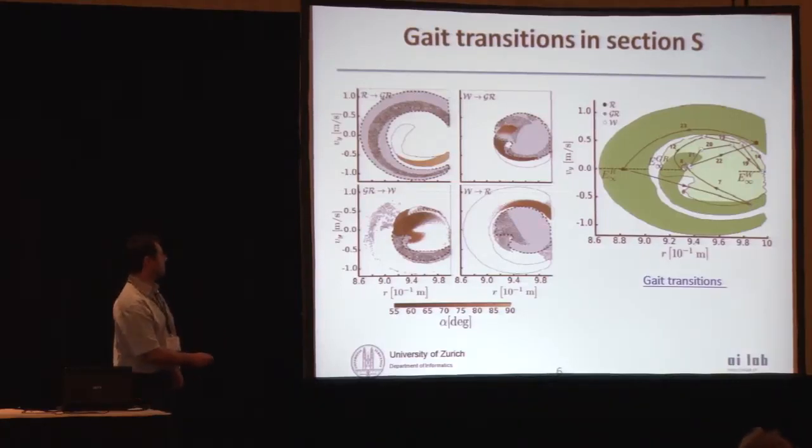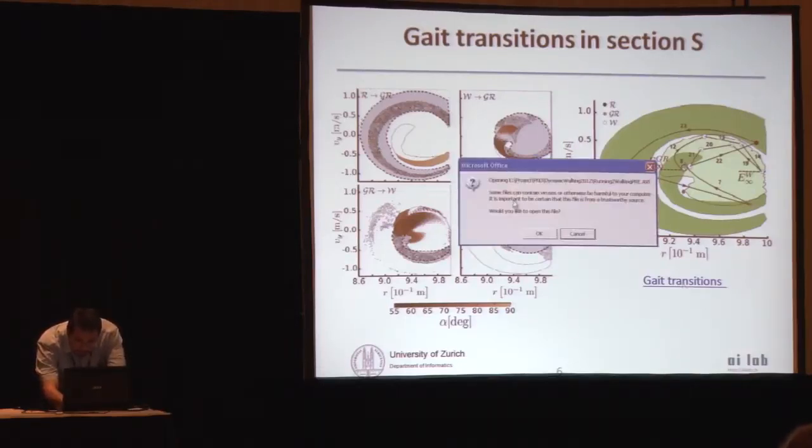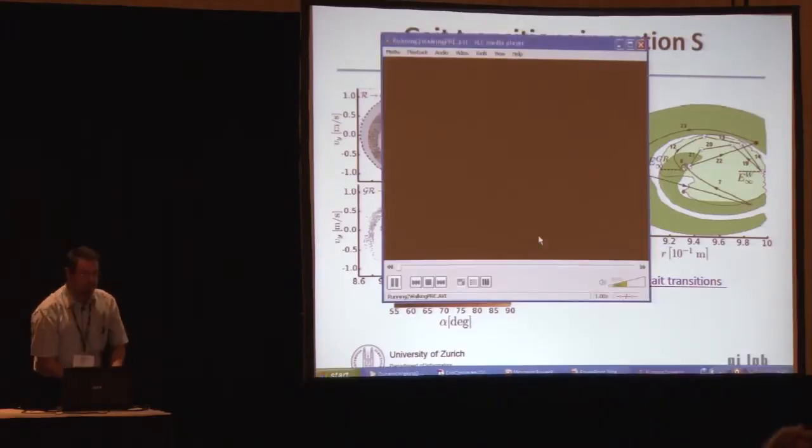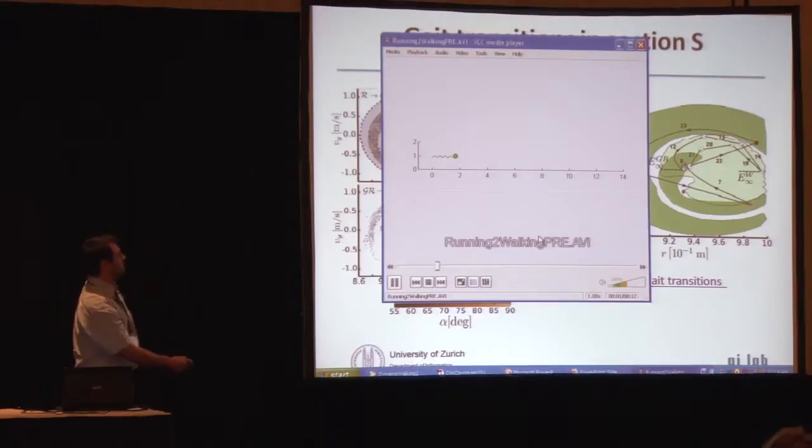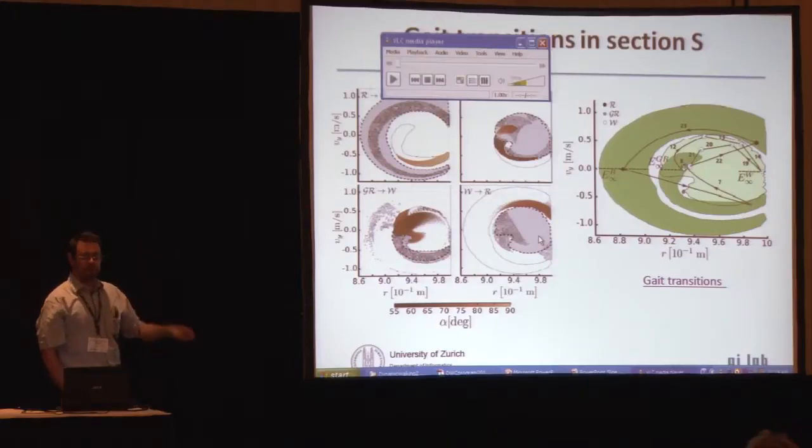As we can see here, these initial conditions of walking, if you select an appropriate angle of attack, can bring the system to running. Here is a simulation showing what is in this picture here. The system starts to run, then you can change the angles to make the system walk. There are different kinds of walking that you can produce with the model, and then you can go back to running again.